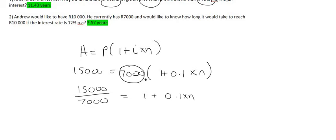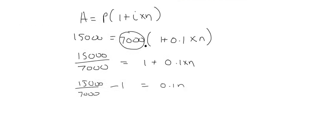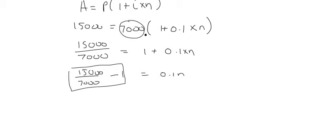Your next step would then be to, and I'm not going to calculate any of this just yet, it would be to take the 1 over. And then what you could do is, you could type all of this in on the calculator. And that will give you 1.1428 equals to 0.1 N. And then if you divide by 0.1 to get N by itself, you're going to get 11.43. So, that means it will take 11.43 years for that amount to grow from 7,000 to 15,000.